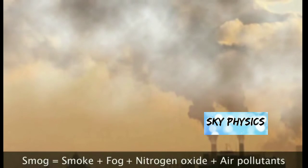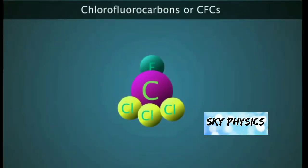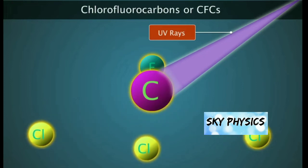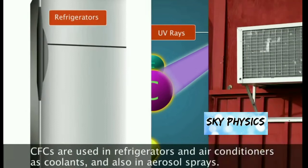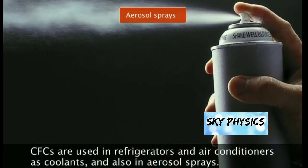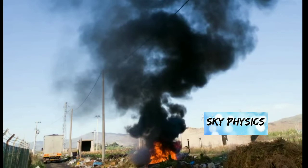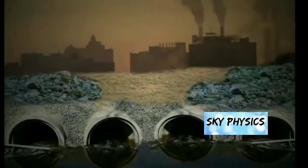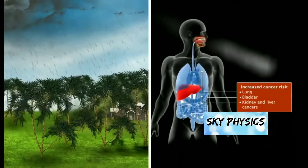What is smog? Smog is a combination of smoke and fog. Nitrogen dioxide is also contained in air pollutants, and smoke affects visibility, especially in the winter season. When UV rays fall on chlorofluorocarbons, the chlorine component splits out. CFCs are widely used in products such as refrigerators and air conditioners as coolant, and also in aerosol sprays. Methane gas is very harmful for humans, plants, and animals. Acid rain not only affects humans but also plants.